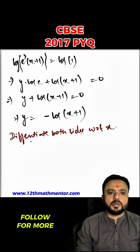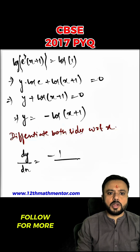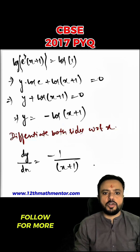Now I will differentiate both sides with respect to x. I get dy upon dx equals negative 1 upon (x plus 1), because the differentiation of log x with respect to x is 1 upon x.